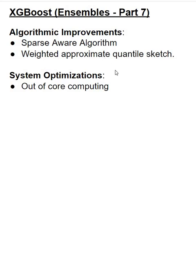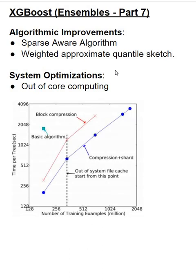This boosts performance significantly. Here is an illustration where a basic algorithm has about 256 million records shown on the X-axis, and the time per tree shown on the Y-axis is approximately 2048. With block compression, we are able to scale and handle much larger data sets that might not fit into memory, and also achieve performance gains in building trees due to parallel operation with multiple threads.